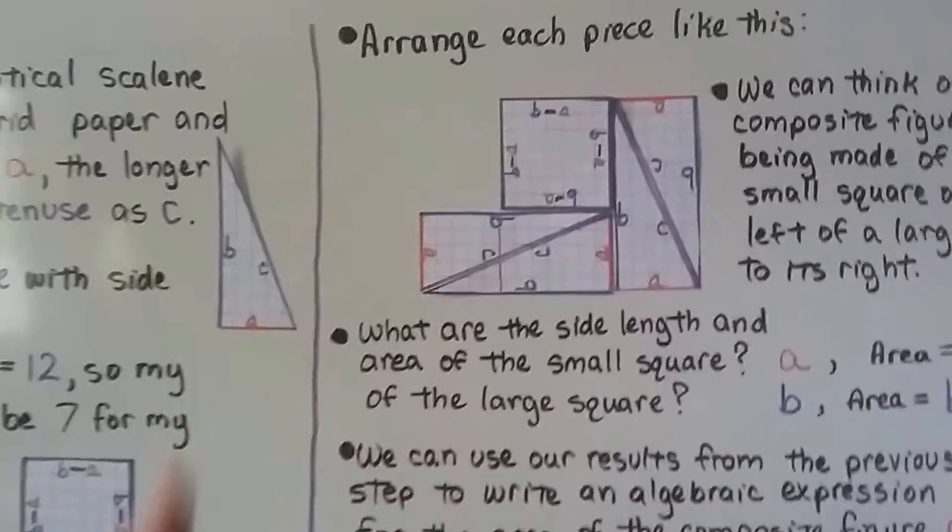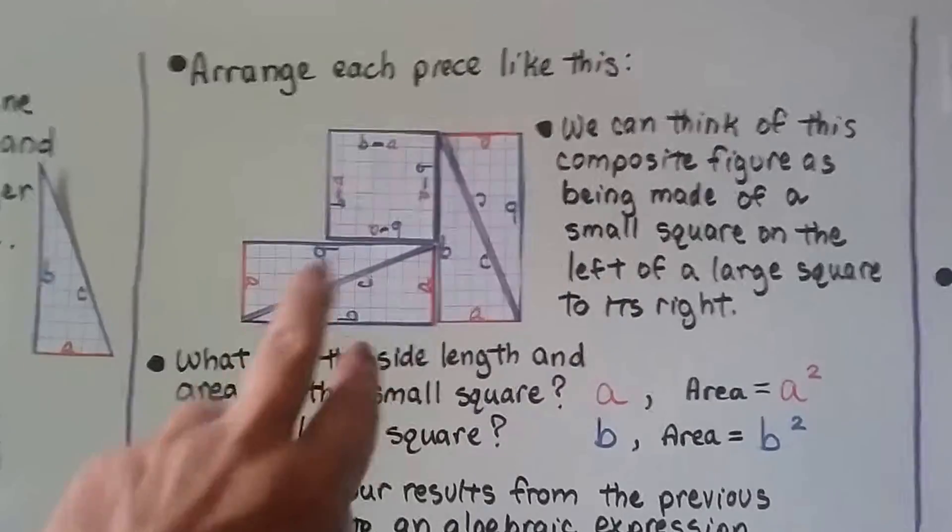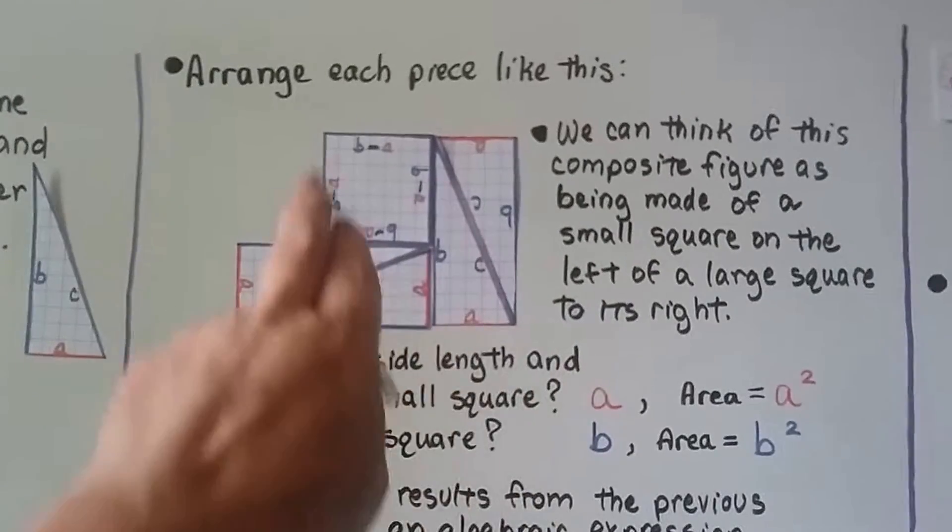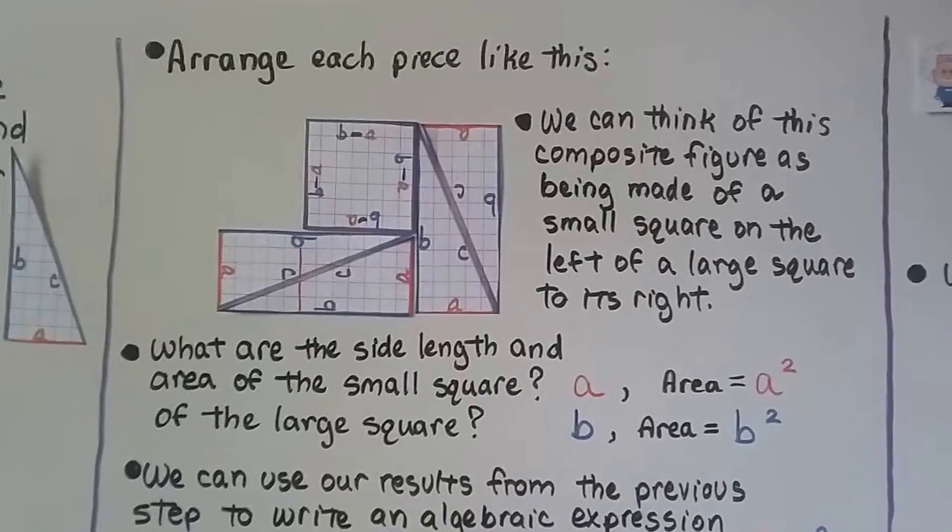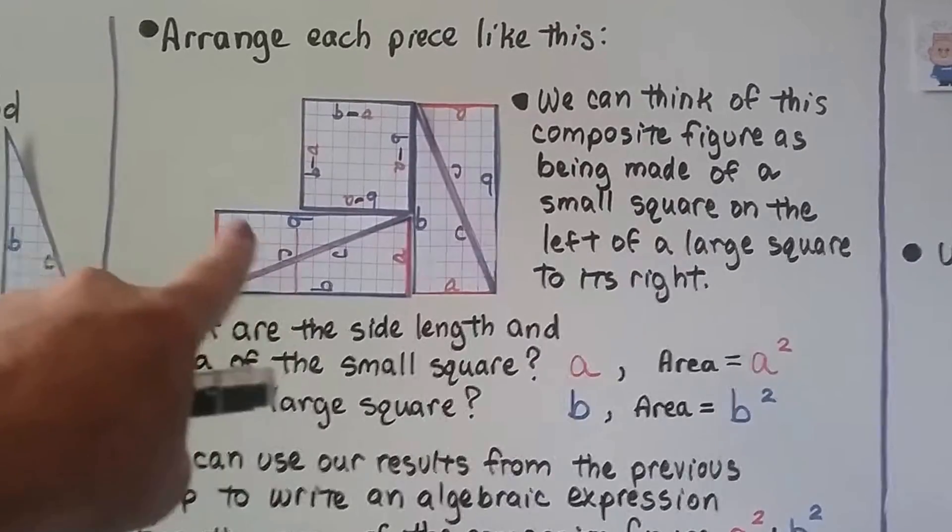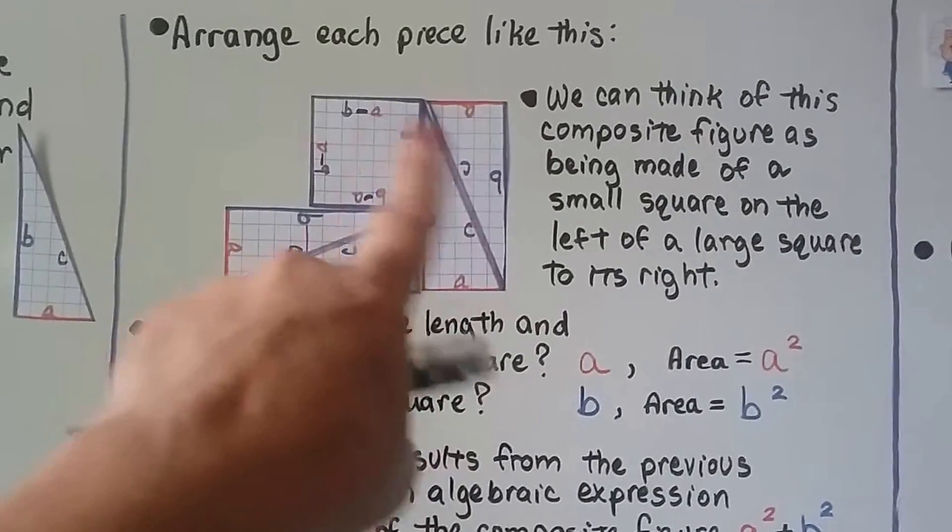We can take these pieces, our four triangles and our square, and we can arrange them like this. If you look, I laid two of them like a rectangle here, two of them like a rectangle here, and then I put the square up there. And we can think of this composite figure as being made of a small square. Right here, you can see I drew a line on the left, and this larger square to its right.